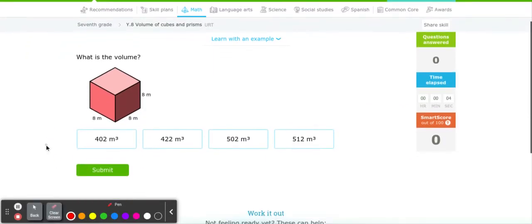So we're asked, what is the volume? In order to find the volume of a cube or a rectangular prism, all we have to do is length times width times height.